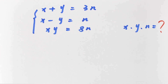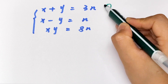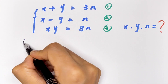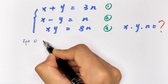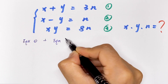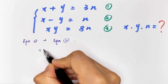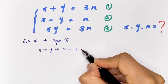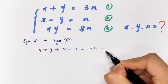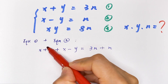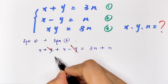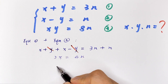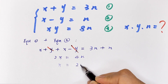First step, we let this be equation 1 and this be equation 2, and this is equation 3. Equation 1 plus equation 2: x plus y plus x minus y is equal to 3n plus n. Here y will cancel, so 2x is equal to 4n, then x is equal to 2n.